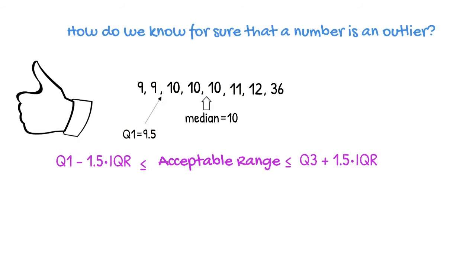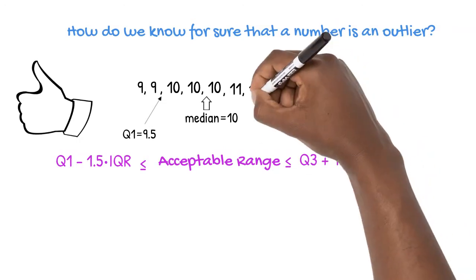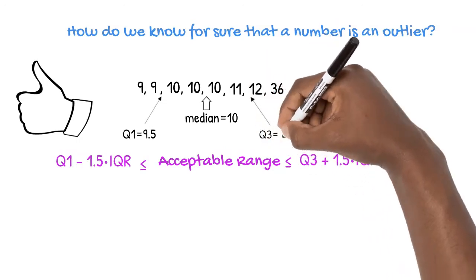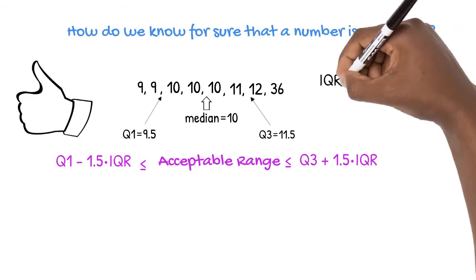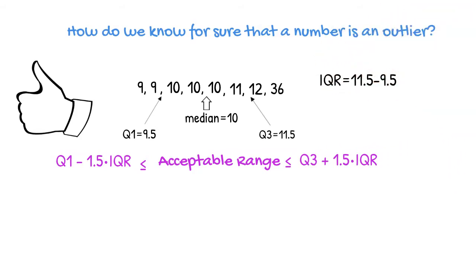The upper quartile is the median of the upper half of the values, the average of 11 and 12. The upper quartile, Q3, is equal to 11.5. We also need the interquartile range, the difference between the upper and lower quartiles. Interquartile range, IQR, is equal to 11.5 minus 9.5. The interquartile range is equal to 2.